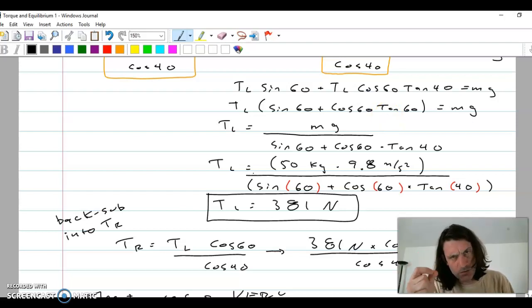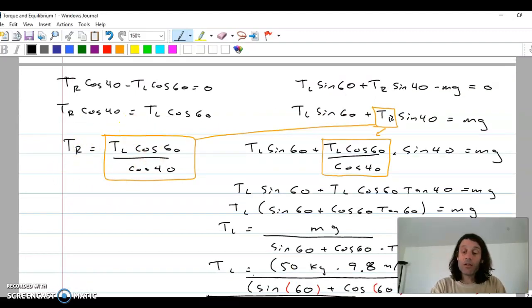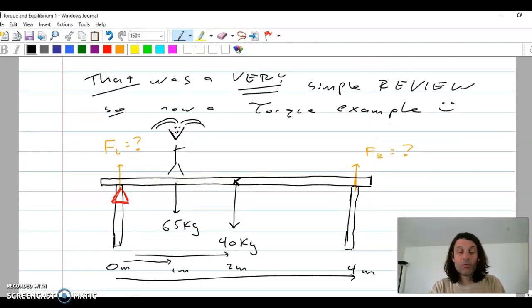Plug numbers in. Please do the math all at once. Parentheses are your friend. So the numerator is just 50 times 9.8. The denominator is that whole entire quantity, sine 60, cos 60, times tan 60. It becomes tension on the left, 381. Now that you know the tension on the left, I'm going to back sub it into the tension on the right. The equation, which is this one right there, that tension on the right, cos 60 divided by the cos 40, 249 newtons. Please remember that. That is a very simple review.